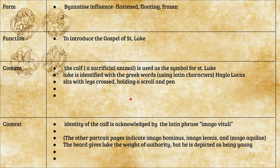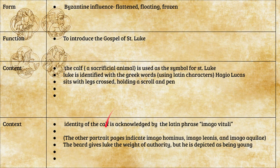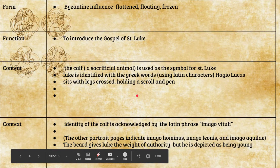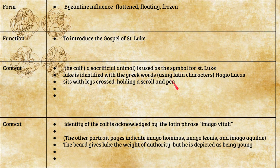The symbols for each evangelist: the imago vituli — image of the ox — is Saint Luke; imago leonis — image of the lion; imago aquilae — image of the eagle; and imago hominis — image of the man — correspond to the other gospel writers.